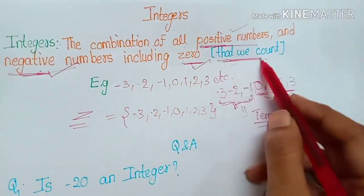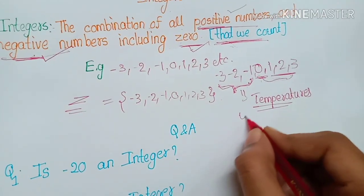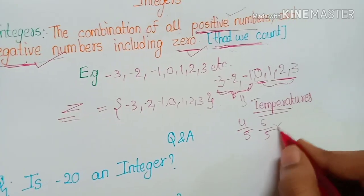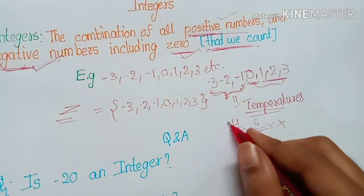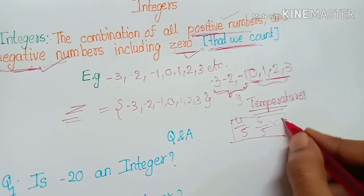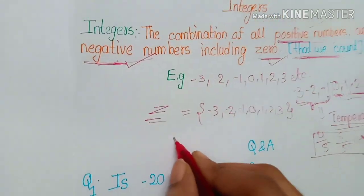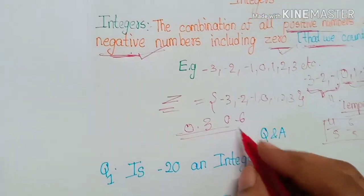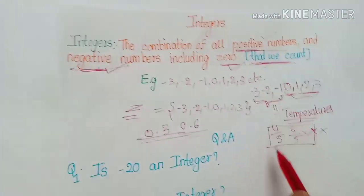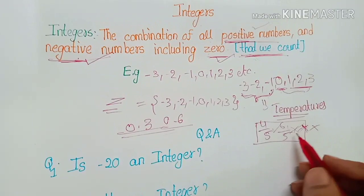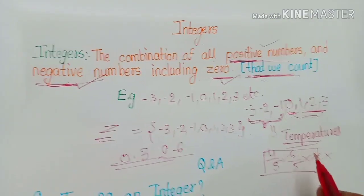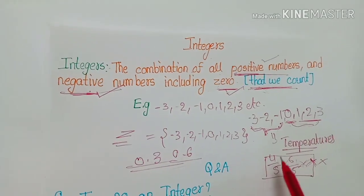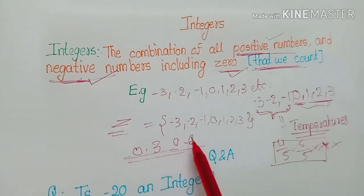Things we can't count totally — like four-fifths or six-fifths — are fractions, which are parts, not whole counts. So fractions do not include integers. Similarly, decimal numbers like 0.3 or 0.6 are also not things we count wholly. Fractions and decimals do not include integers because we can't count them totally.